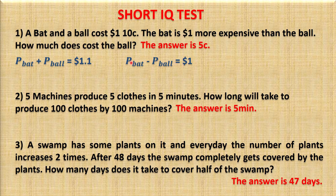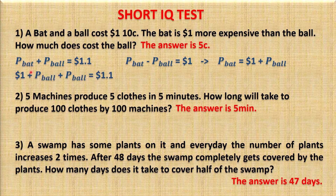From the second equation, the price of the bat equals $1 plus the price of the bow. We move the price of the bow to the right side, where it becomes positive. Substituting into the first equation gives us: $1 plus price of bow plus price of bow equals $1.10.